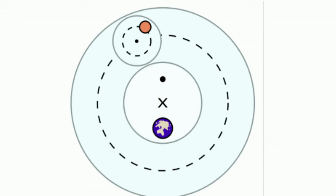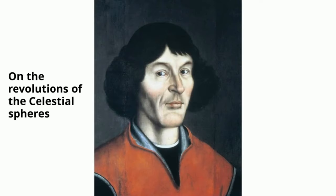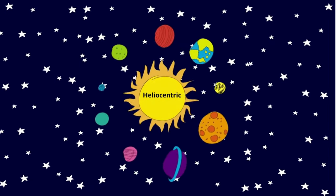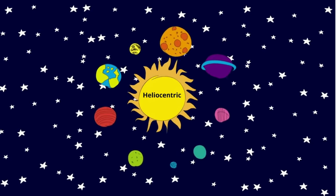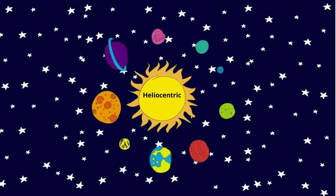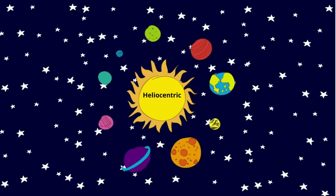This model of the Earth being the center did not sit well with Copernicus, and in 1543 he proposed 'On the Revolutions of the Celestial Spheres,' in which he explained what many had suspected: that the Sun is at the center of the universe and that we move on Earth along with the other planets around the Sun. This is called the heliocentric model.